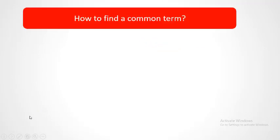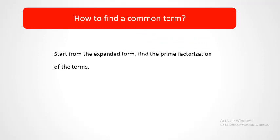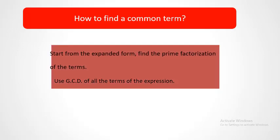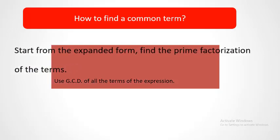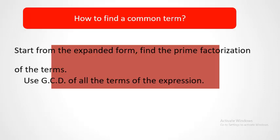How do we find a common factor? First, start from the expanded form. Second, find the prime factorization of the terms. Third, use the GCD of all the terms of the expression.